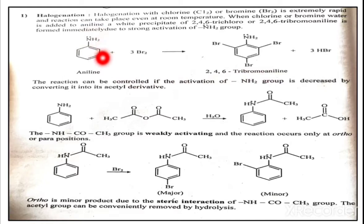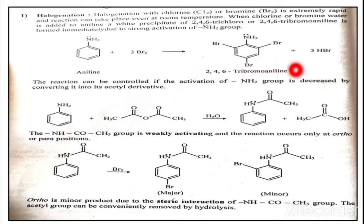When aniline is treated with Br2 we get 2,4,6-tribromoaniline, and with Cl2 we get 2,4,6-trichloroaniline. The reaction can be uncontrollable, meaning we get polyhalogenated products.